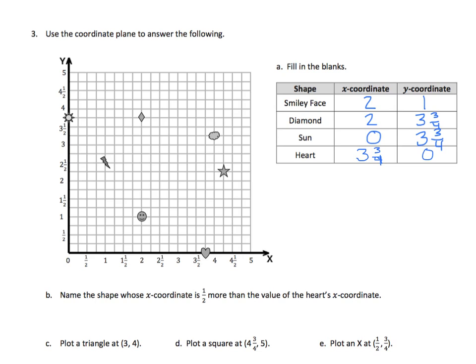Continuing, it says, name a shape whose x-coordinate is half more than the value of the heart's x-coordinate. Well, here's our heart. And we need to go up by a half. This is three and three-fourths. So if we go one, two, up to there, that is two-fourths more, or the value is four and one-fourth.